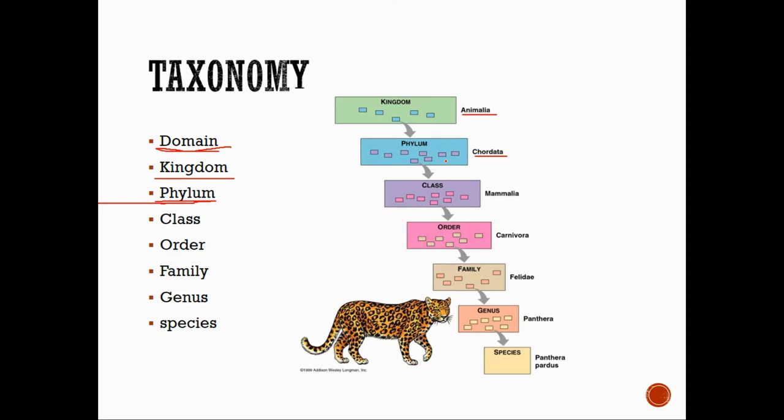Then we work down towards class. We, as well as this cat, are in class Mammalia. We're mammals. We are homeothermic, we have hair, and more importantly we are placental, which means our babies develop inside the female's body and are nourished through the female's body. We nurse our young with mammary glands, and that's where the name mammal comes from.